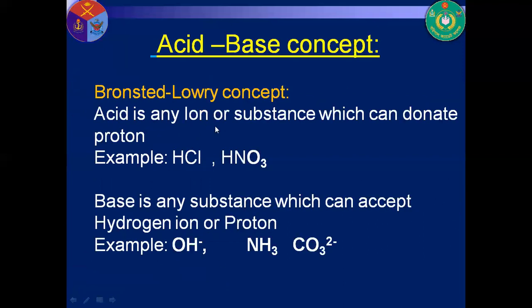According to the Brønsted-Lowry concept, acid is any substance which can donate a proton. For example, HCl can donate H⁺ ions. Base is any substance which can accept a hydrogen ion. For example, hydroxyl group accepts hydrogen ion from water; ammonia accepts hydrogen ion to form ammonium ion; carbonate ion accepts hydrogen ion to form carbonic acid. So, according to Brønsted-Lowry concept, acid donates a proton and base accepts a proton.